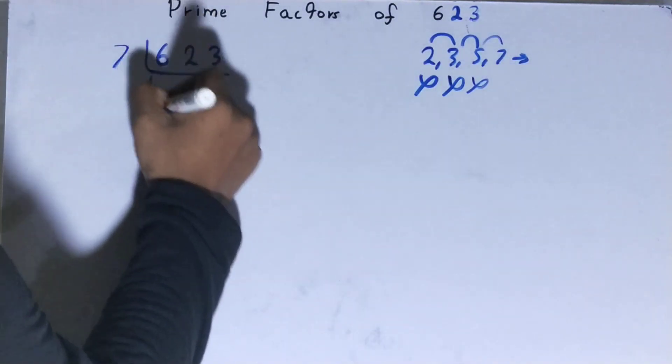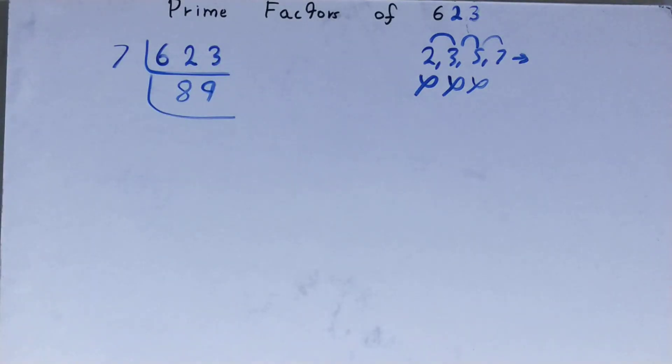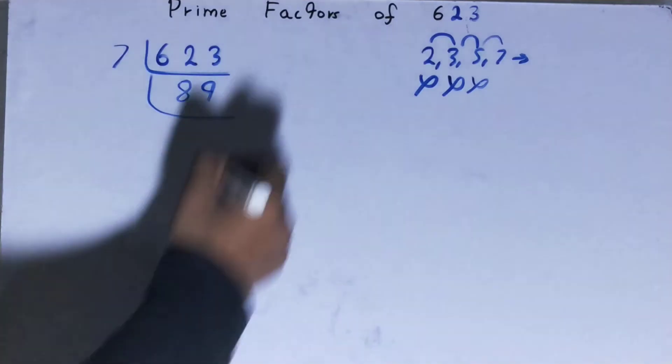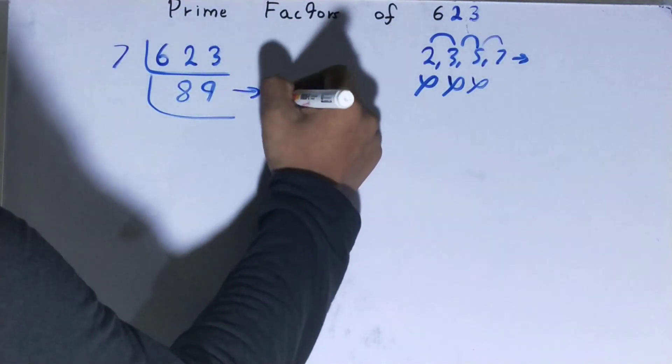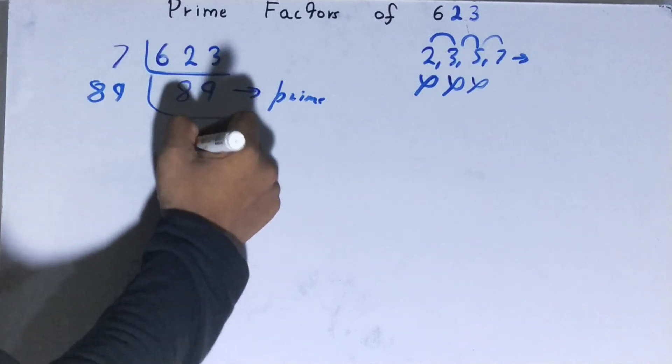So divided, 7 times 89 is 623. Right, now 89 is further not divisible by 7 because 89 is a prime number itself. So to divide this 89, you need 89 on the left-hand side, and when you do so, you'll be left with 1. Once the result is 1, the work is done.